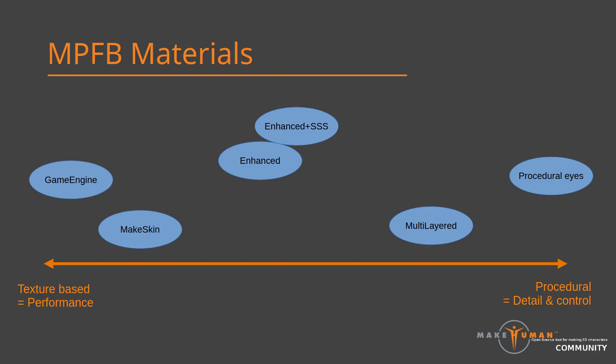They contain different amounts of procedural logic, ranging from the game engine material which is completely image-based, to the procedural eyes which is completely procedural. The default material model is MakeSkin, and if you do not say otherwise this is what will be used for everything. It is a mostly image-based material but with some minor procedural tweaks. The upside of using MakeSkin is that it is simple, efficient and mostly easy to understand, while the downside is you will not get the bells and whistles available in the other material models.